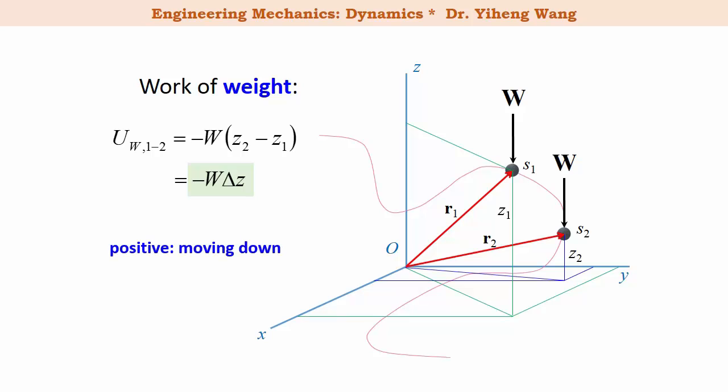If the particle is moving downward, then z2 is smaller than z1, delta z is negative, therefore the work done by weight is positive. This is easy to understand because as the particle moves downward, it is moving along the direction of the weight force. If the particle is moving upward, then z2 is bigger than z1, delta z is positive, and the work done by weight is negative. This is also easy to understand because as the particle moves upward, it is against the direction of the weight force, therefore the weight force is doing negative work.